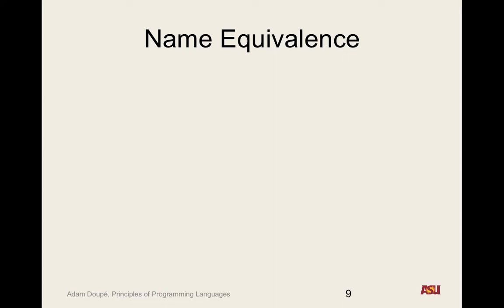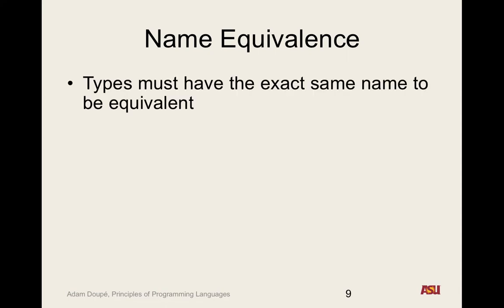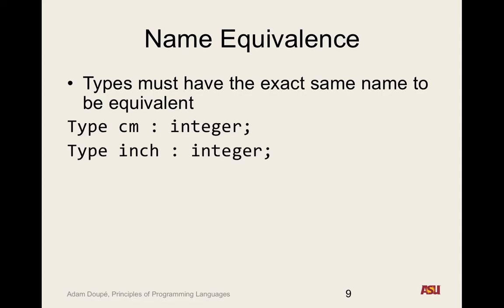The first is name equivalence — the types have to have the exact same name to be equivalent, otherwise they're not equivalent. So in the case of centimeter and inch, x is centimeter and y is inch — can we assign x to y? No, they're not the same type name, so that's going to error out.